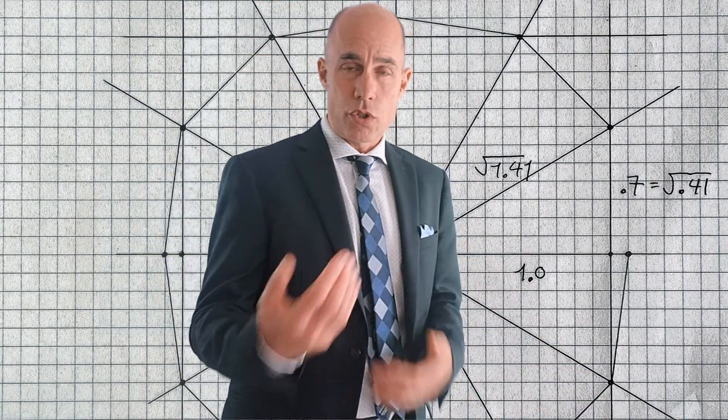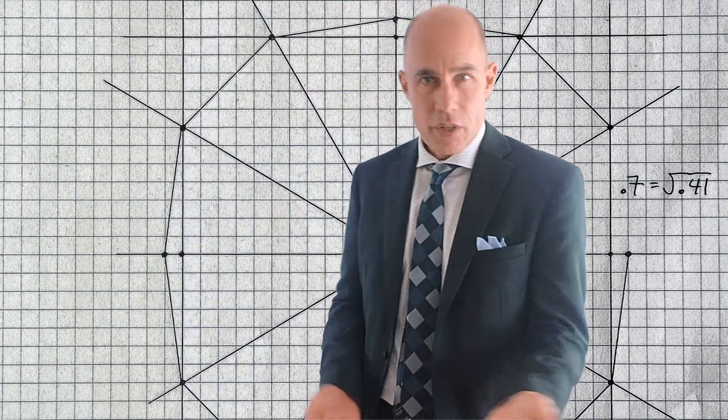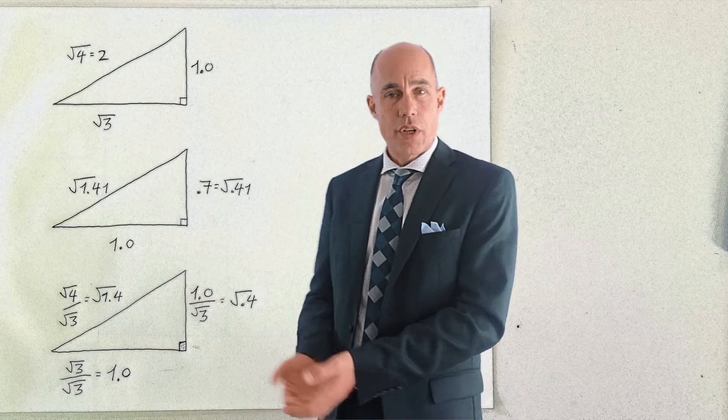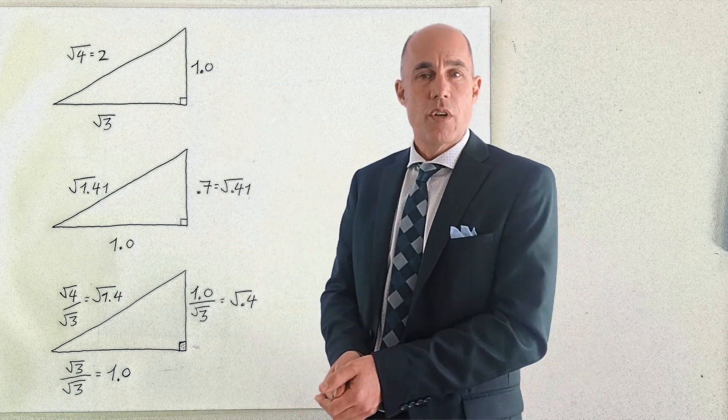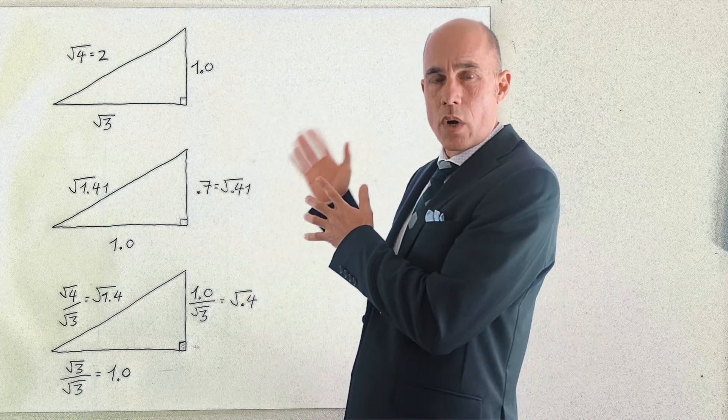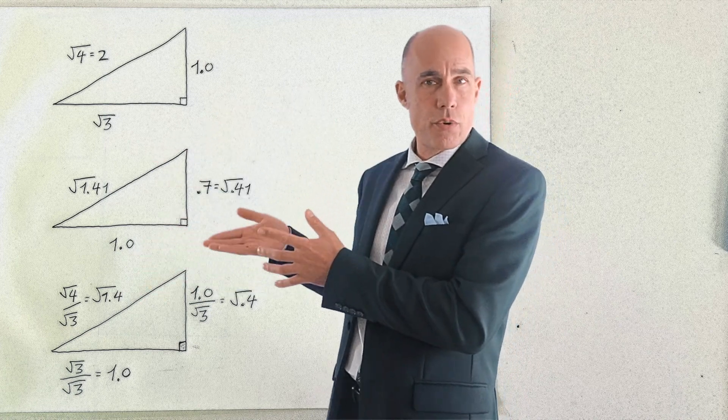So what we're going to do is look at those two triangles and compare them by creating a third triangle. So here is the 30 degree angle at the top, the special right triangle with the dimensions of 1 and 2 and the square root of 3 as its base.